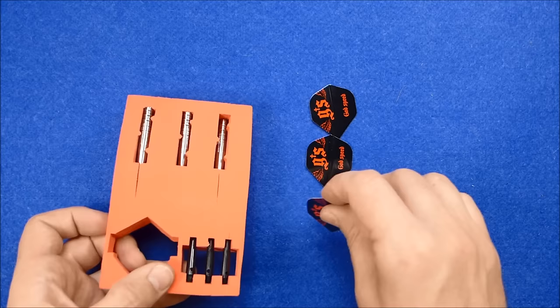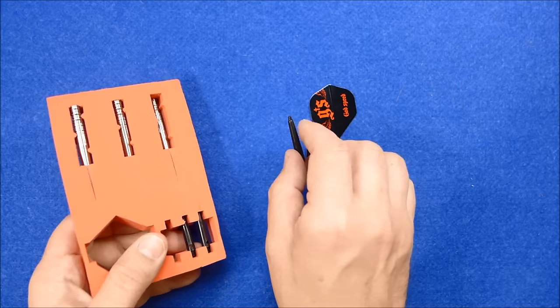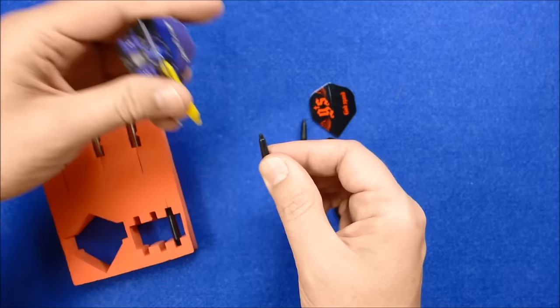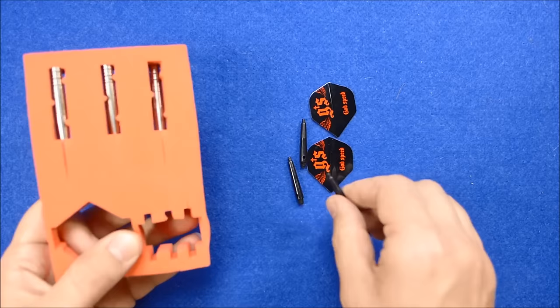Now they come with your Godspeed standard shaped flights and these are I'd say they're short or there could be extra short stems. I'll just compare them with my own. Yeah I think they're short. They look like short gripper shafts.